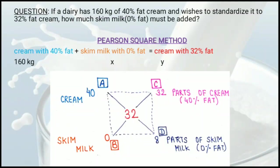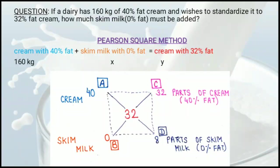Before solving, you need to draw a square box with sides A, B, C, D and a center. In the center, we write the value of the required product — we need cream with 32% fat, so we write 32 at the center.